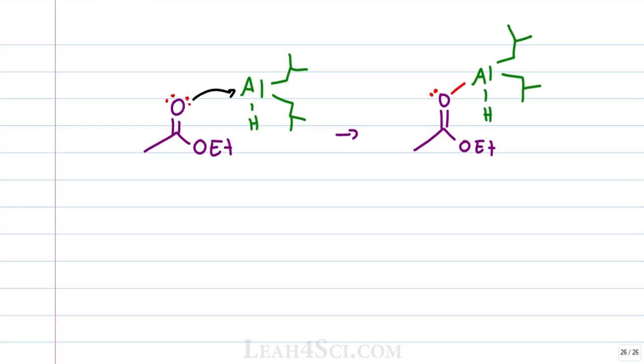When oxygen attacked, it turned its lone pair into a bond and got a formal charge of plus one. Aluminum went from being neutral with three bonds to having a formal charge of negative one. These atoms are not very stable so you're going to see a cyclic flow of electrons as one reaction triggers the next.